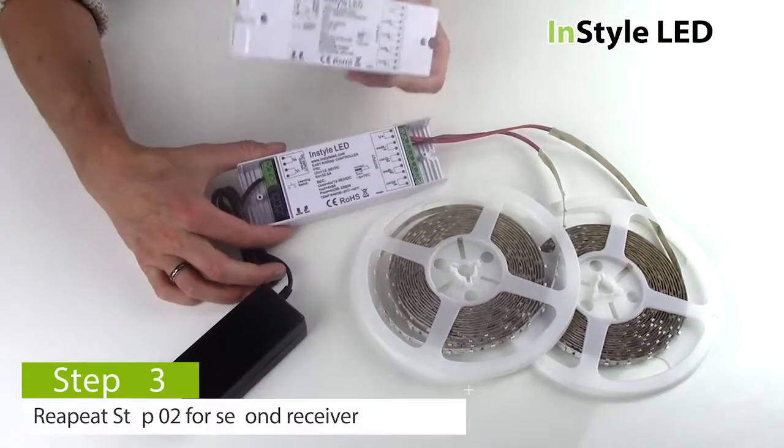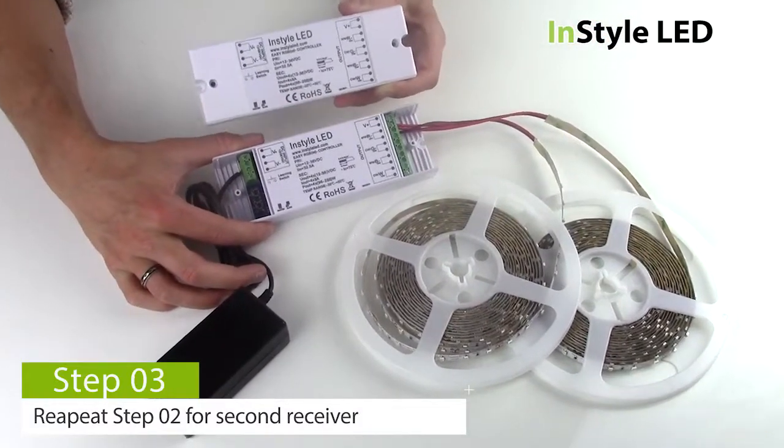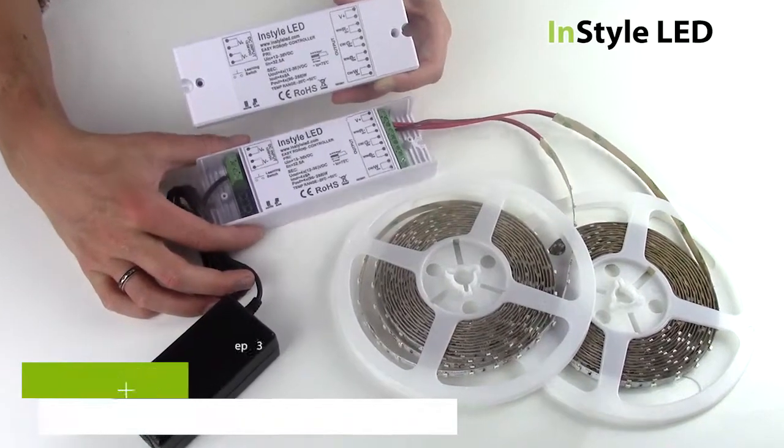You then repeat this wiring process for the second zone multi receiver and so on if you wish to add more receivers.